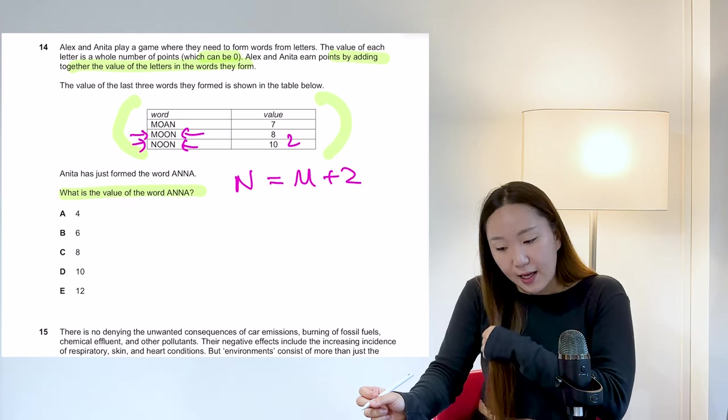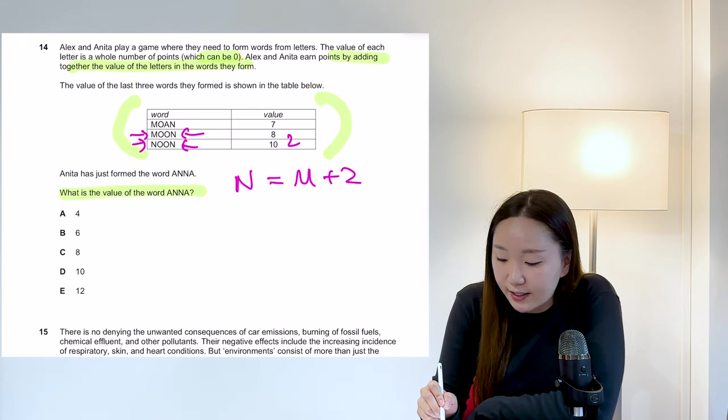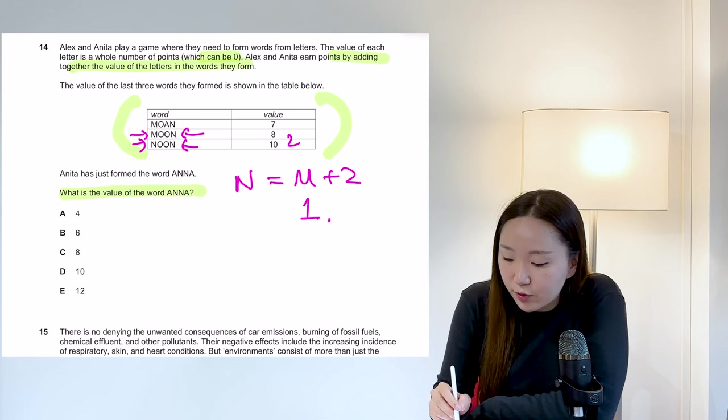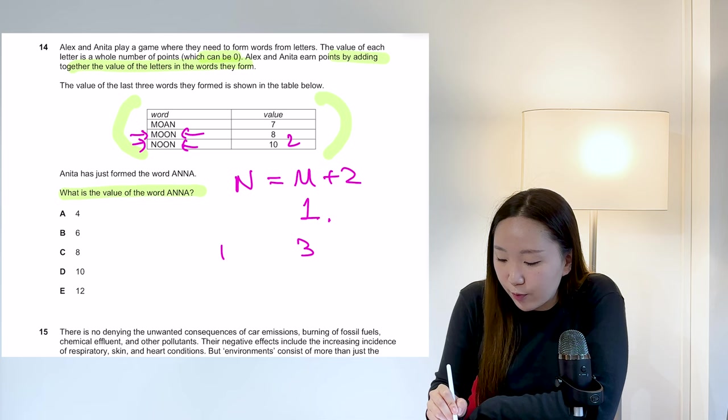If that is the case, and we give a random value, so we just assign M a value of one. In the case of moon, it would be, N would have to be three, M would be one, and then that would leave OO being two, two. So this is how it would look.